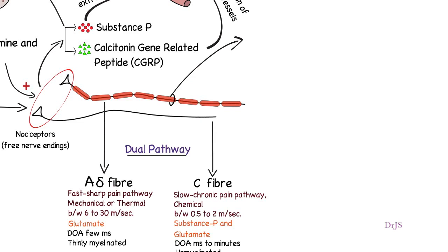On entering the spinal cord, the pain signals take two pathways to the brain: the neospinothalamic tract for fast pain, and the paleospinothalamic tract for slow chronic pain.